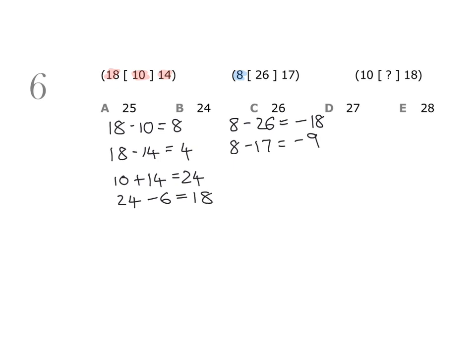But looking at the middle group, I've got the same problem, because 26, the middle number, is actually the largest number. So if I add 26 and 17, I get 43, and if I do 43 take away 6, I get 37, which is not the middle number.